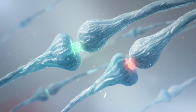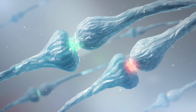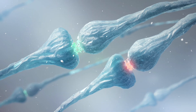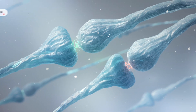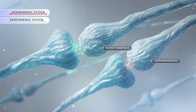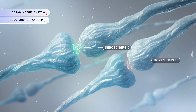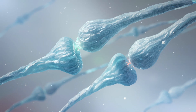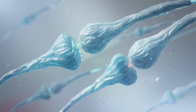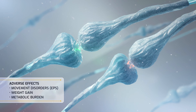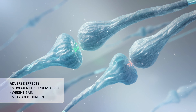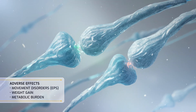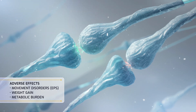Second-generation or atypical antipsychotics reduce such side effects by simultaneously blocking D2 and 5-HT2A receptors. However, many atypical antipsychotics remain associated with EPS and are frequently linked with increased weight gain and metabolic burden.